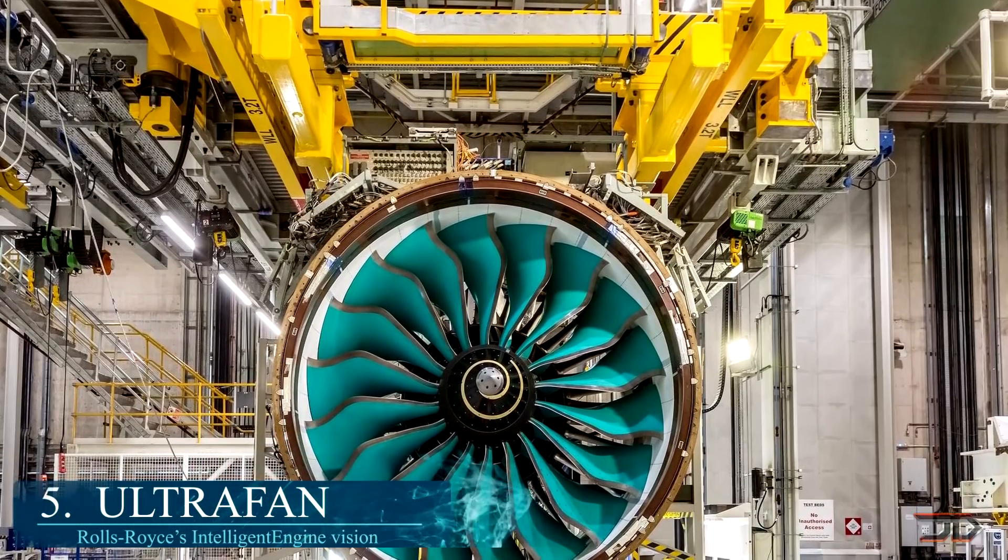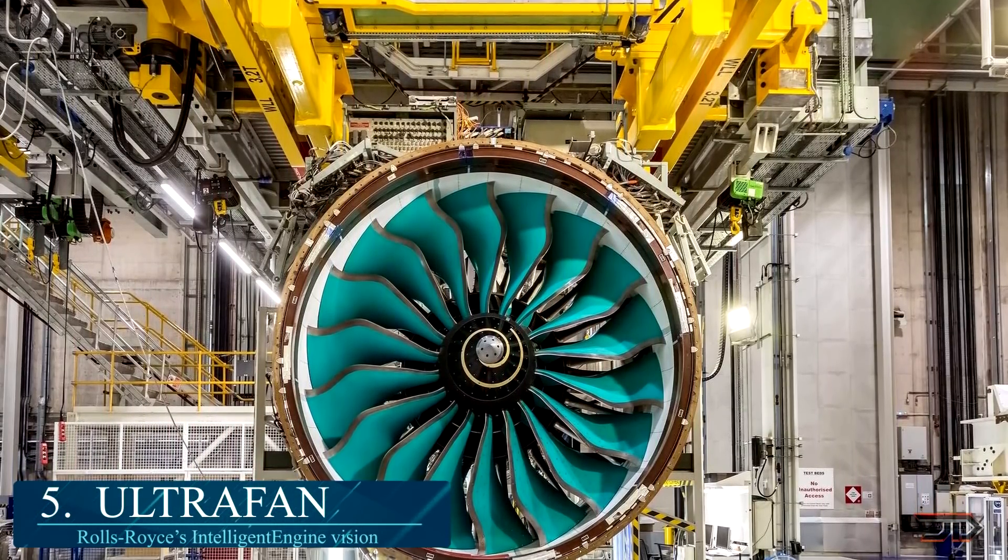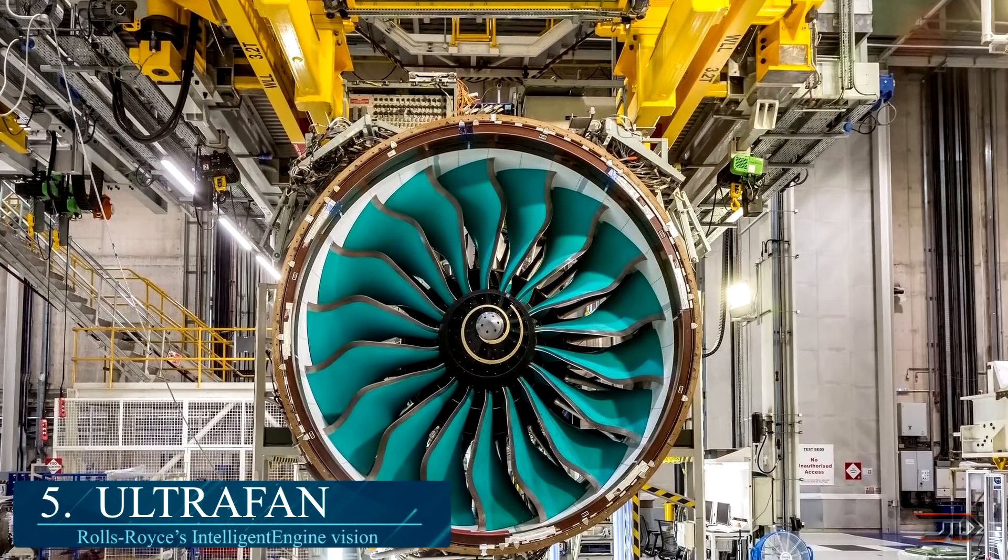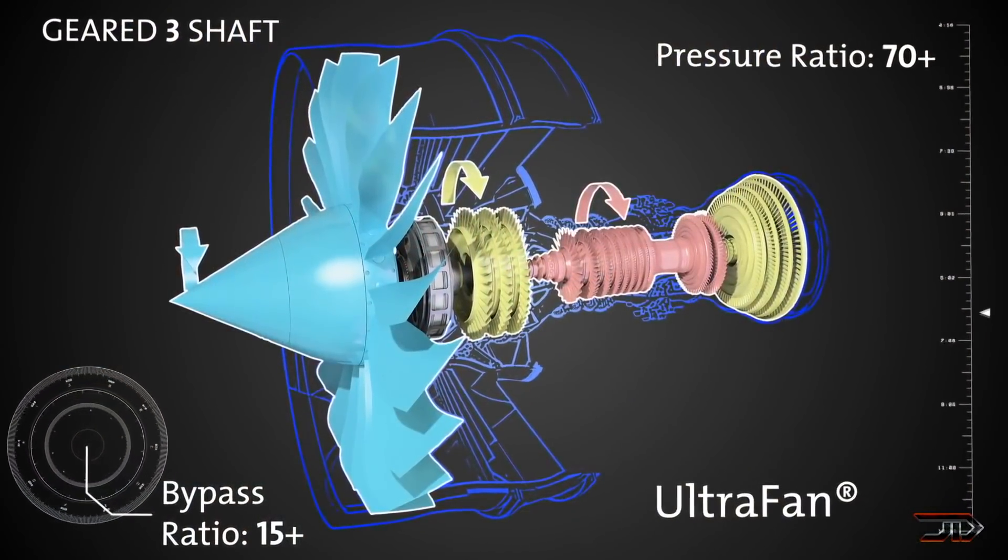At number 5, the Ultra Fan. Rolls-Royce is currently working on one of the biggest jet engines to ever be produced. The company claims that it would provide a 25% uptick in fuel efficiency over the first-generation Trent Turbo Fan.